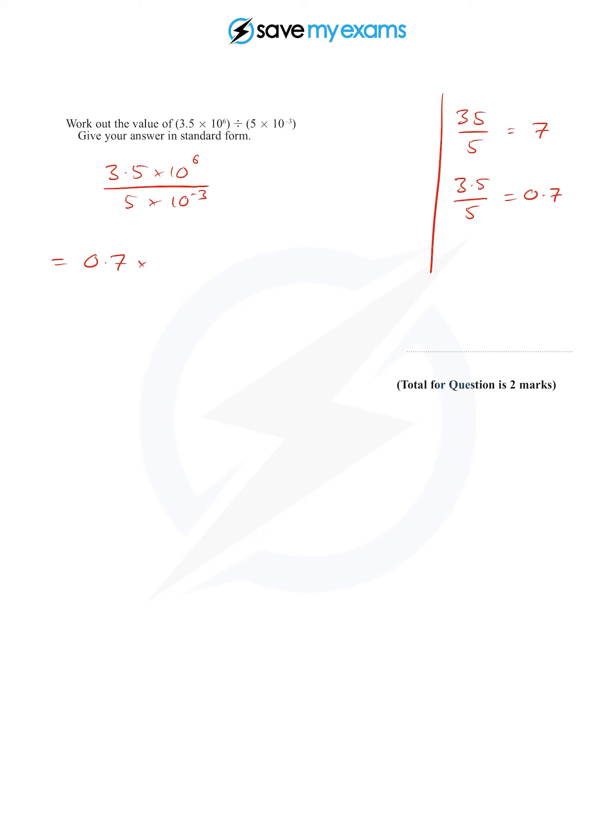Now what about this bit here: 10^6 over 10^-3? Well, there is a little indices rule we can use. If I've got a^p and I divide by a^q—so the same base—what do I do to the powers? I subtract the powers: a^(p-q).